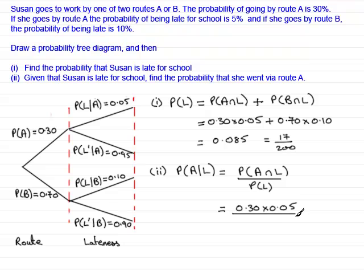All divided then by the probability of being late, and that was this value here, 0.085.